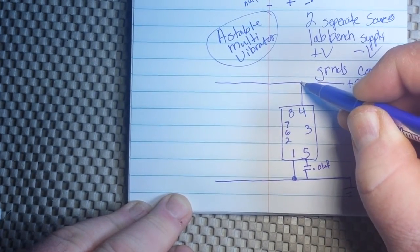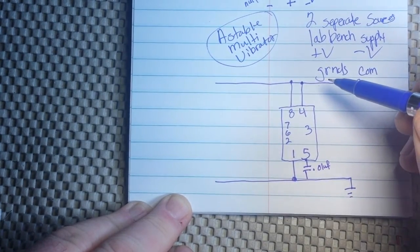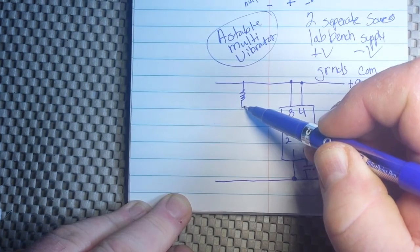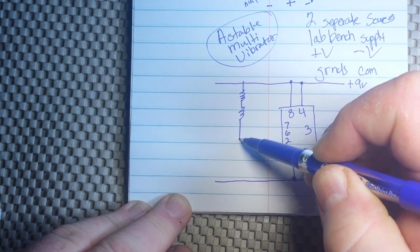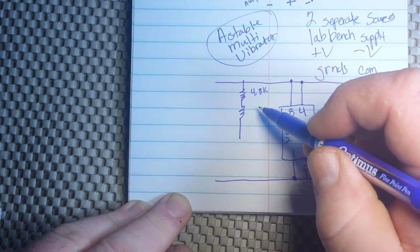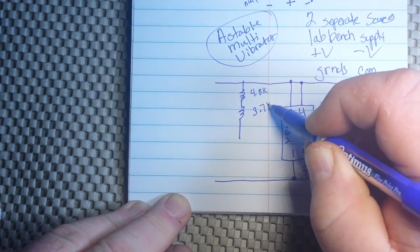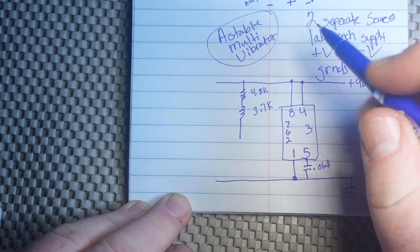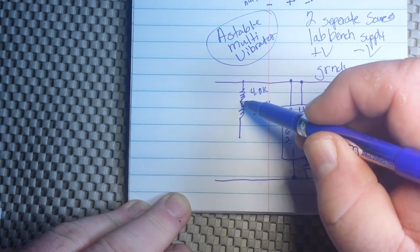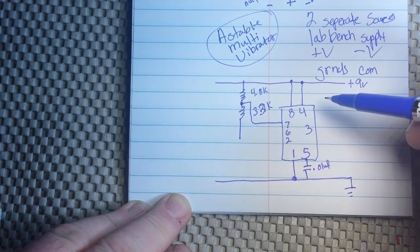Pin five through a 0.01 microfarad capacitor to ground. Pin four to our positive voltage. Pin eight to our positive voltage. And then what we're going to do is we're going to come down here, create ourselves a little voltage divider circuit. We'll use a 33K resistor. And we will bring this down to pin seven, okay?